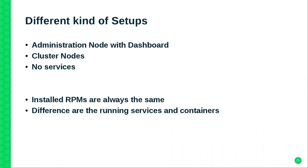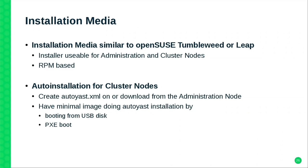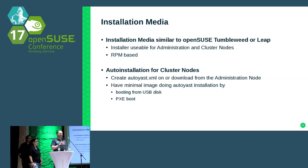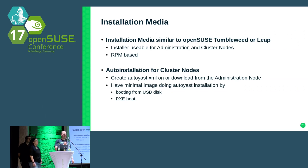With cloud-init you can decide at every boot whether this is an administration node, a cluster node, or whatever. The installation media is similar to Tumbleweed or Leap — a DVD with RPMs and the installer. We also have an RPM providing an installer ready to run for PXE boot. You can copy the content to a USB stick and make it bootable. No need to download the full DVD if you only want network installations.